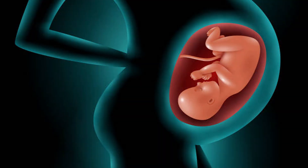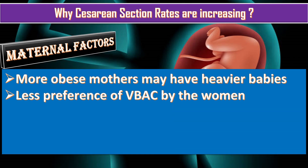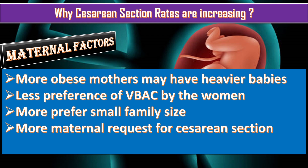Among maternal factors, obesity is included because more obese mothers may have heavier babies. There is less preference for vaginal birth after cesarean section by women. Nowadays more women prefer a small family size, so there is a trend towards cesarean section. Other maternal factors include maternal request for cesarean section and tocophobia.